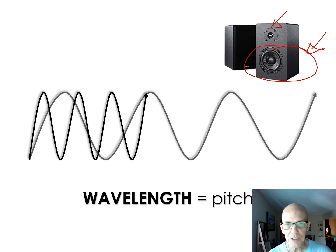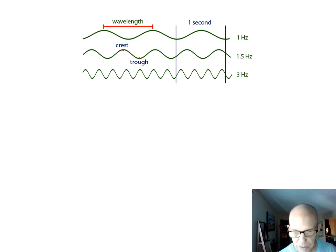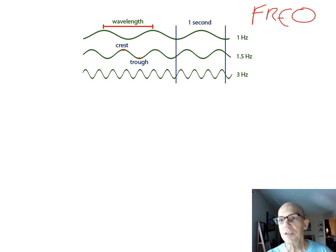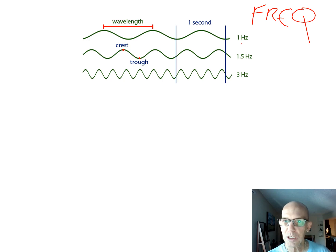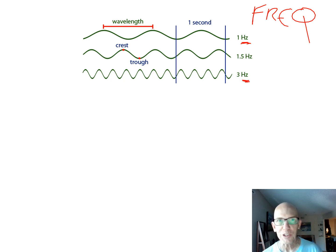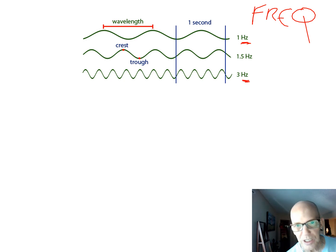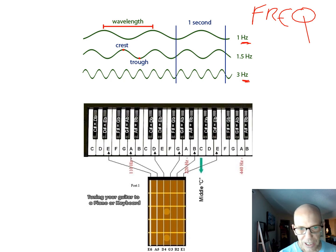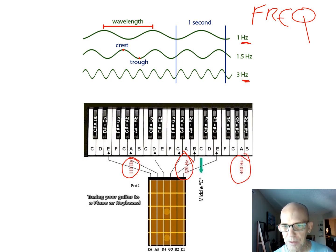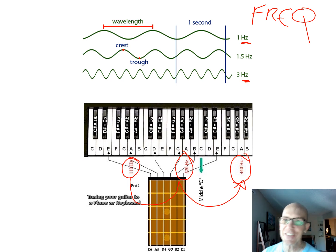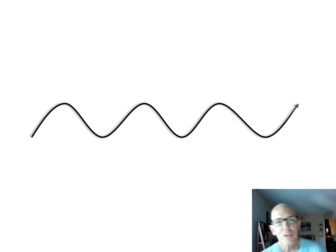Frequency is measured in Hertz — waves per second. One Hertz is one wave per second. For music, the note A is at 110 Hz, then 220, then 440 — each octave doubles the frequency. The other function of a sound wave is amplitude — how tall the wave is. AM means amplitude modulation, FM means frequency modulation. Amplitude for sound is volume — turning it up.